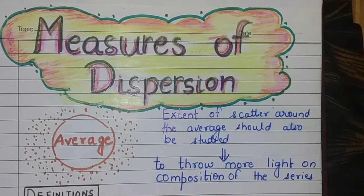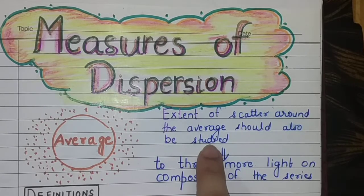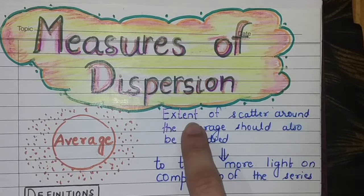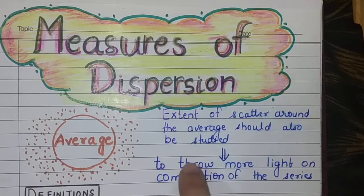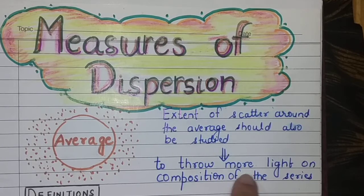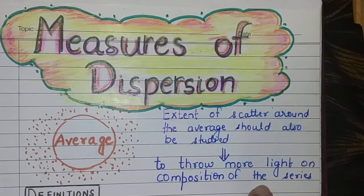Measures of dispersion. What is dispersion? Dispersion means how much your data is scattered. Why do we need to study the dispersion level? The extent of the scatter around the average should also be studied to throw some light on the composition of the series.